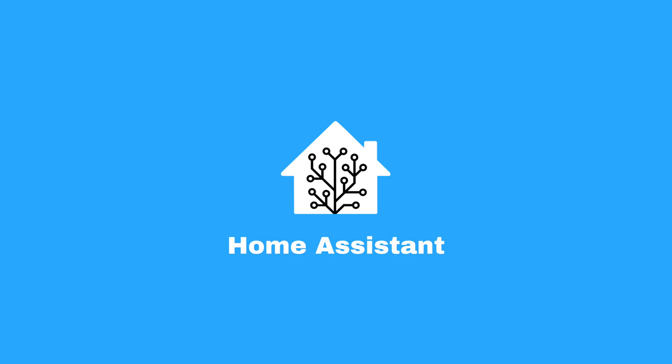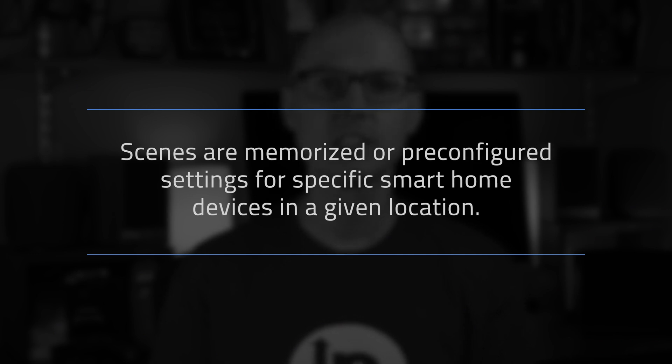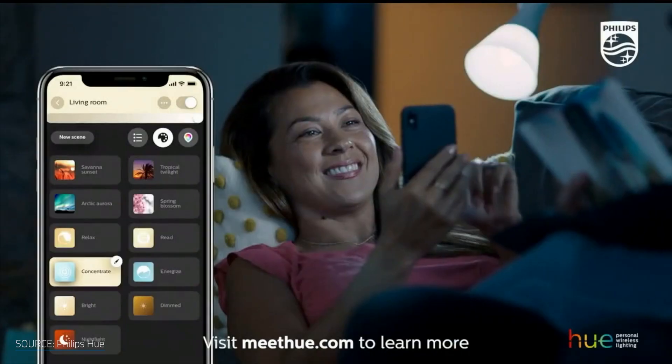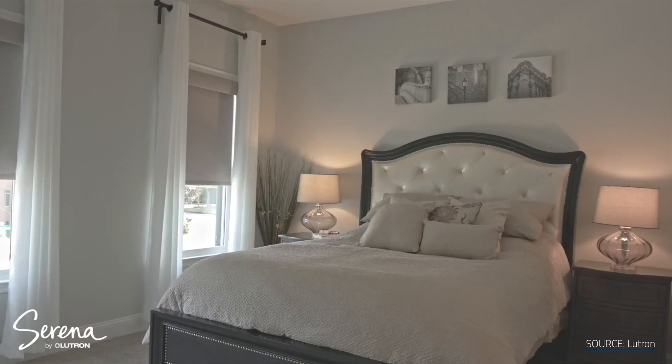One of the first things you need to understand and master is scenes. It doesn't matter what system you're using — whether it's Philips Hue, Apple Home, SmartThings, Home Assistant, Lutron — one thing most of them have in common is scenes. So what are scenes? It's a memorized or pre-configured setting for specific smart home devices in a given location, like a room. Think about all of the lights you turn on when you get home from work, or how you like to set your lights when you're eating dinner or watching a movie in the living room. You're basically setting up lights, outlets, and devices — turned on and to what level — and saving that preset into your home automation app of choice. Then you can activate that scene at the press of a single button, by talking to your voice assistant, or by setting up routines to trigger it automatically.